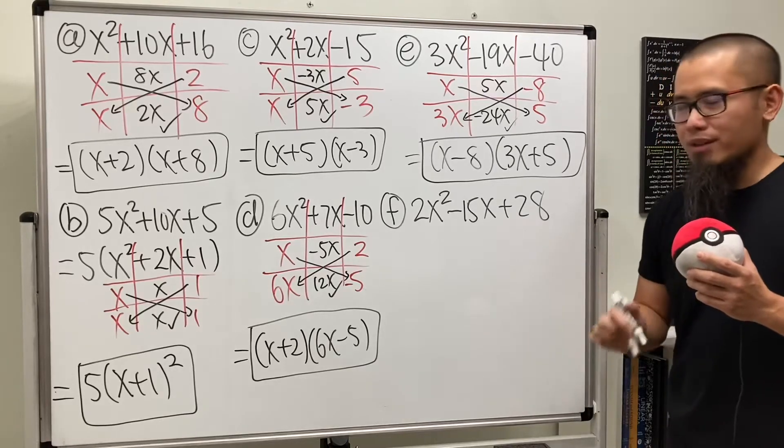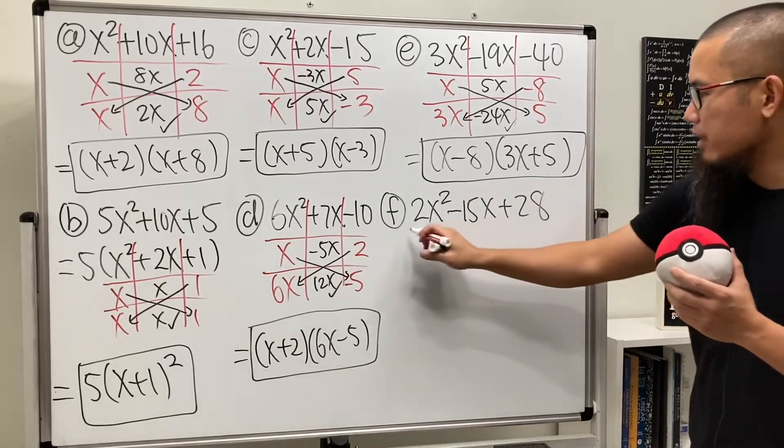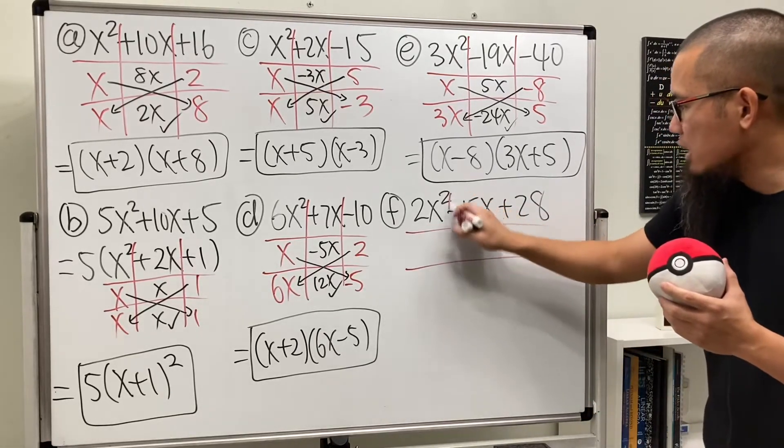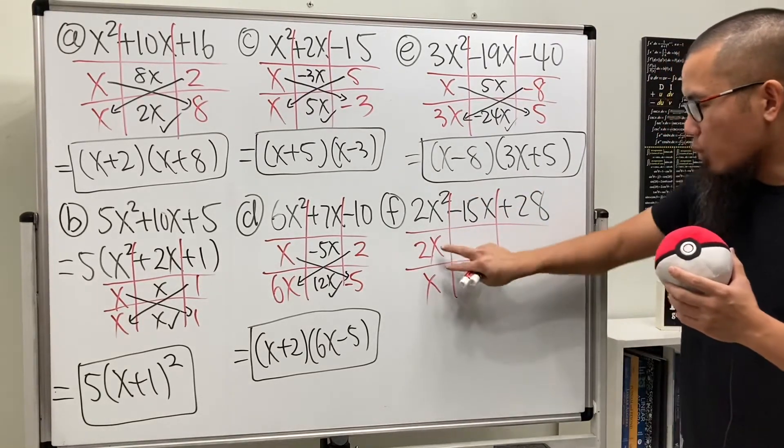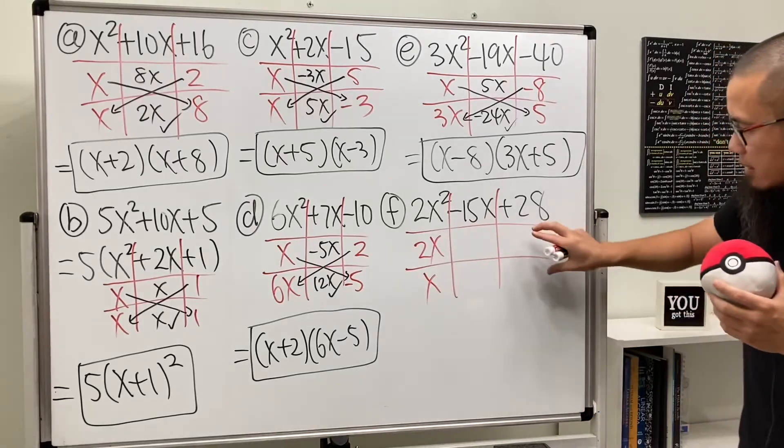Now for the last one. Again, cannot factor out any common factor. Just go ahead and proceed. For the 2x squared, let's put down 2x and x. Again, the order right here doesn't matter.